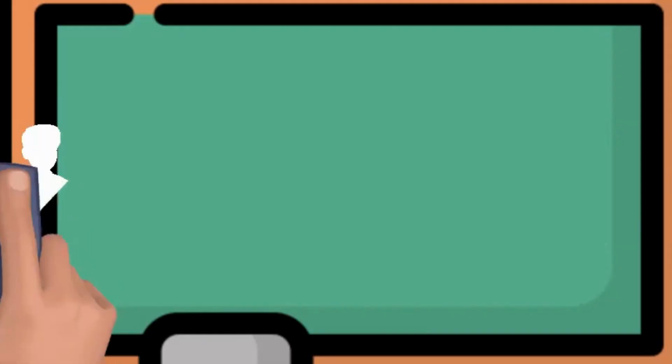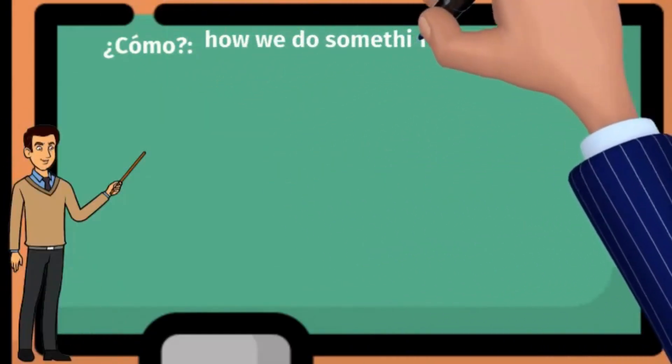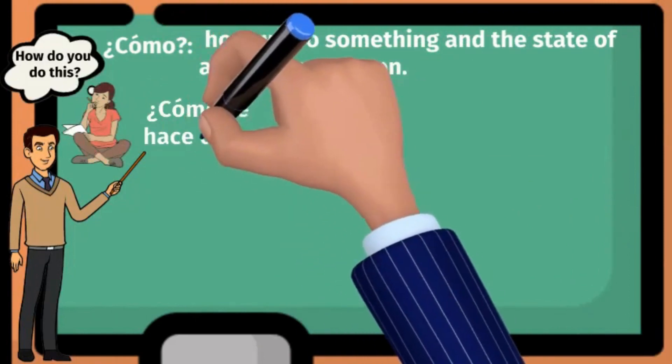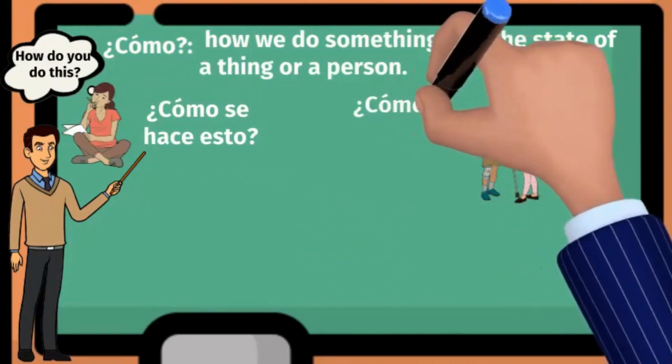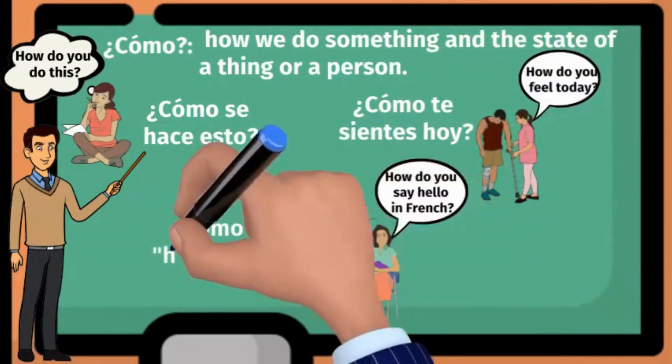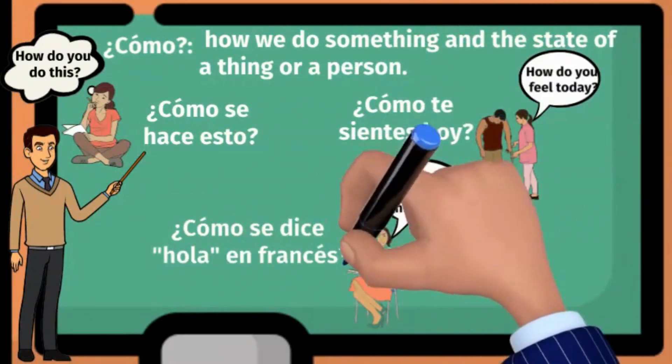Next on our list is ¿Cómo?. This pronoun allows you to ask questions about how we do something and the state of a thing or a person. If you want to know these things, you can ask ¿Cómo se hace esto?, ¿Cómo te sientes hoy?, or ¿Cómo se dice hola en francés?